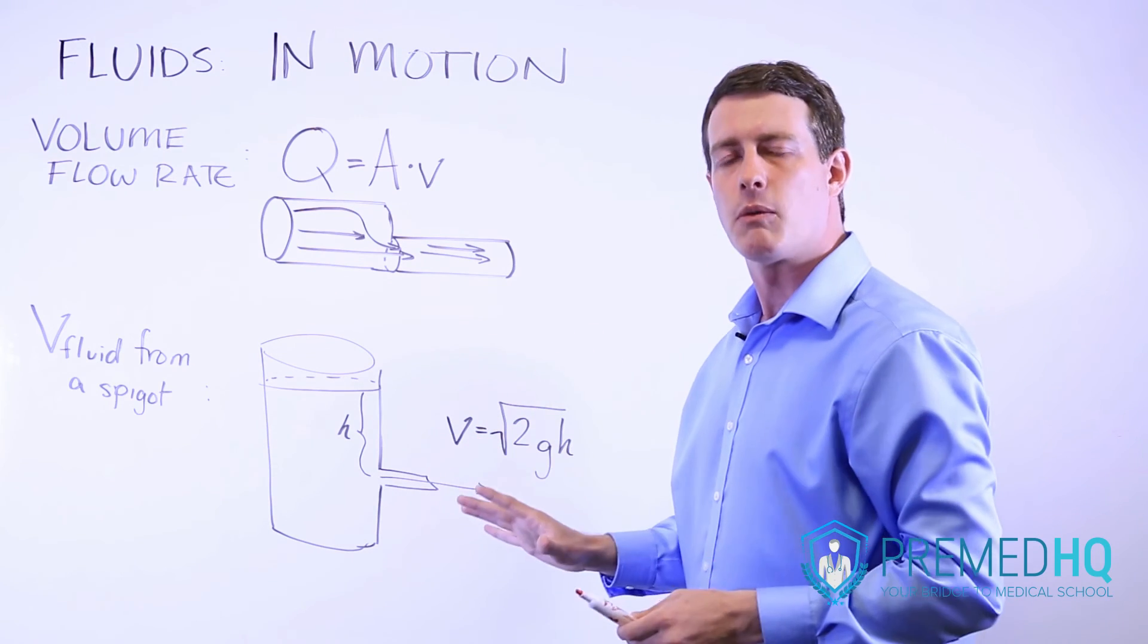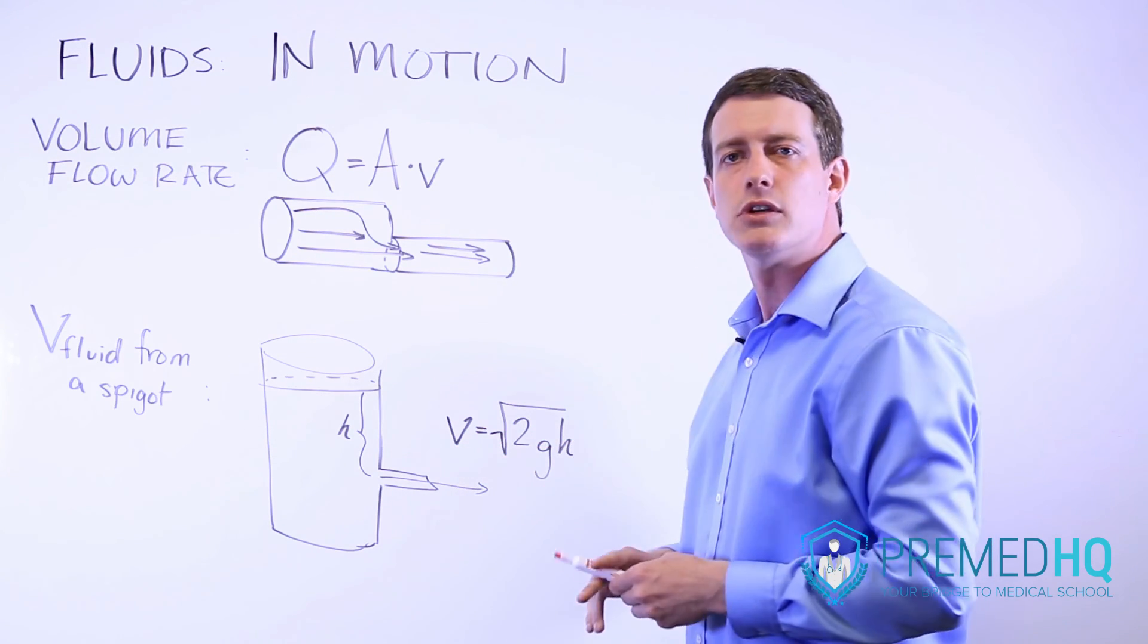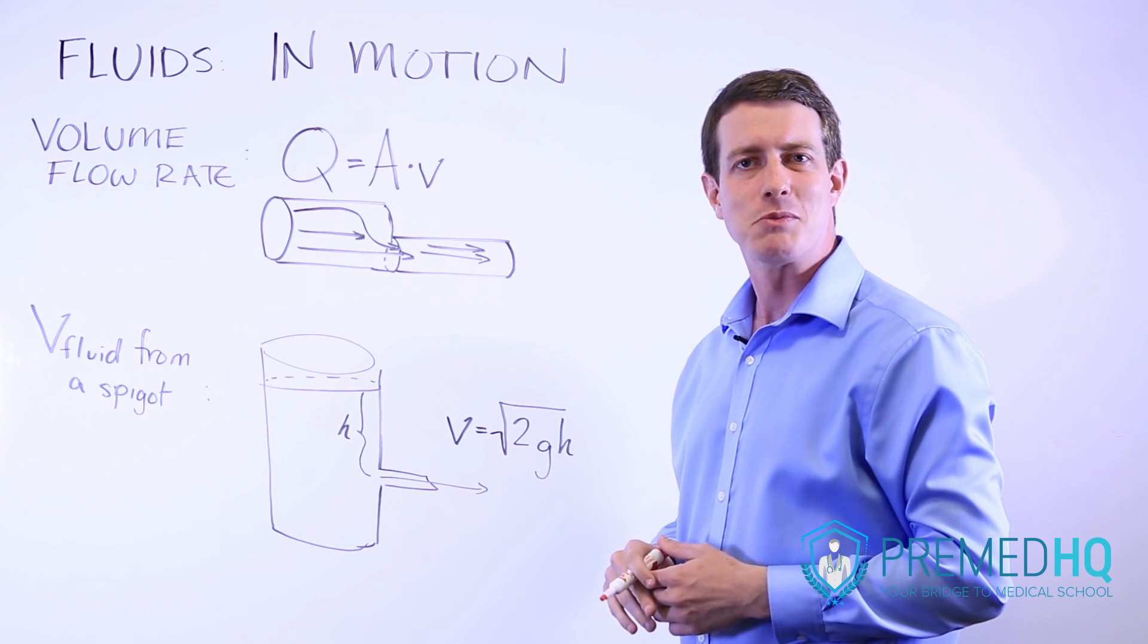And the formula for that, you can remember this one and commit it to memory, is that velocity equals the square root of 2GH. And then we'll move on to Bernoulli's principle.